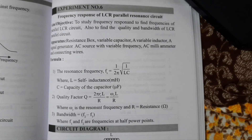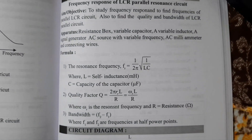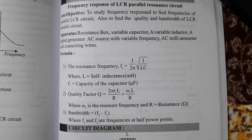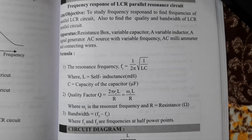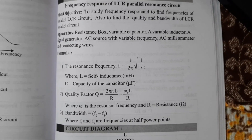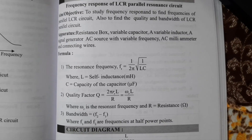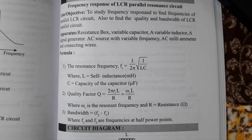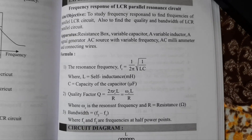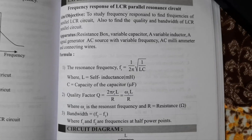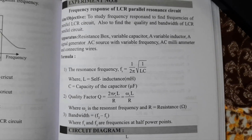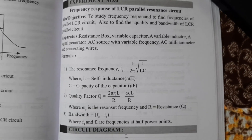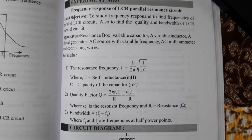I will show you the formulas required for the calculation. Similar to the series circuit, for the parallel circuit you also have to calculate the resonance frequency: 1 divided by 2 pi times the square root of L into C, where L is inductance and C is capacitance. The quality factor is 2 pi times resonance frequency times inductance L divided by resistance R. The bandwidth is calculated after plotting the graph of current versus frequency.